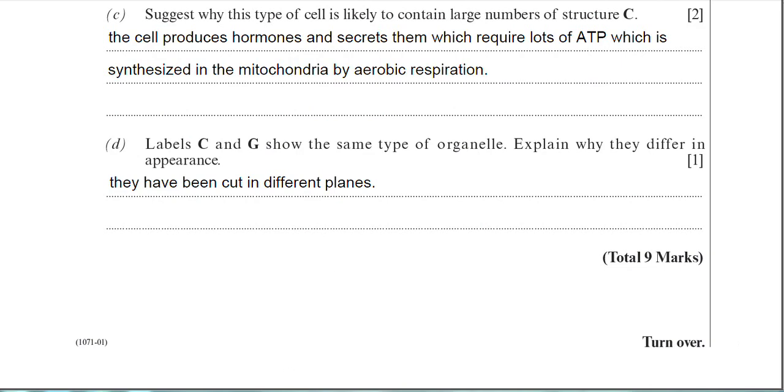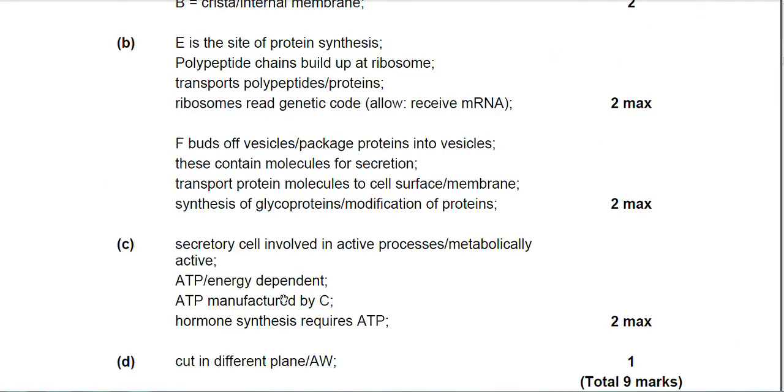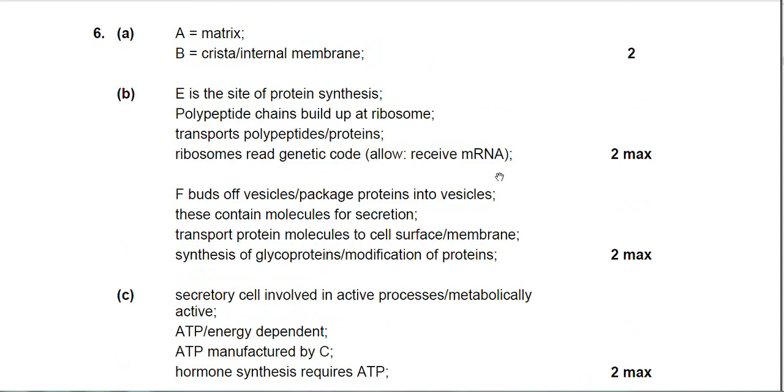We can now look then at the mark scheme briefly. I don't think there's anything too much to say about it. Part B then, they've got lots of different options to the functioning of E and F. So I've only mentioned two functions for E and two functions for F. But you can read yourself the other acceptable answers that the examiner would have accepted.